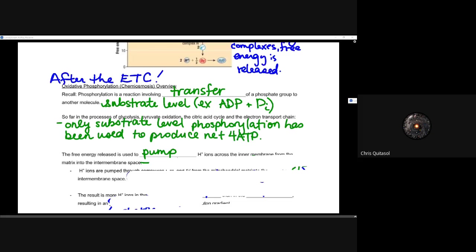So far in the process of glycolysis, pyruvate oxidation, citric acid cycle, and the electron transport chain, we have only looked at substrate level phosphorylation. That's the only thing that has been used to produce that net four ATP. Recall at the beginning of this unit, or the beginning of the day, I looked at the overview of aerobic respiration and I said there's two types of phosphorylations we're looking at, that substrate level phosphorylation as well as that oxidative phosphorylation. Now as we get to the oxidative phosphorylation, we really start to skyrocket in terms of ATP production.